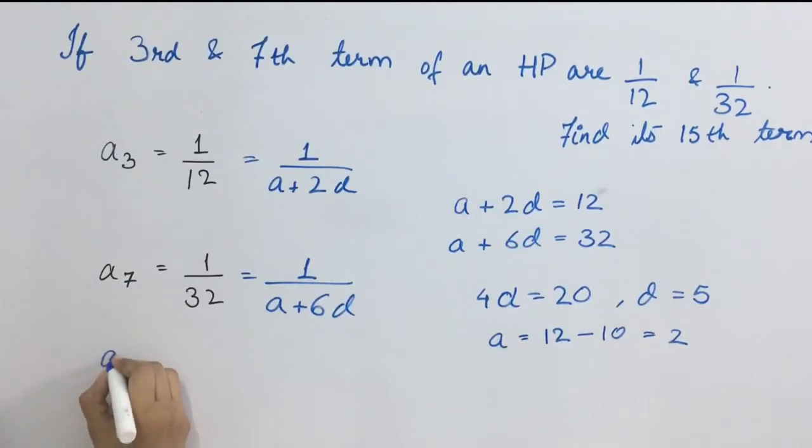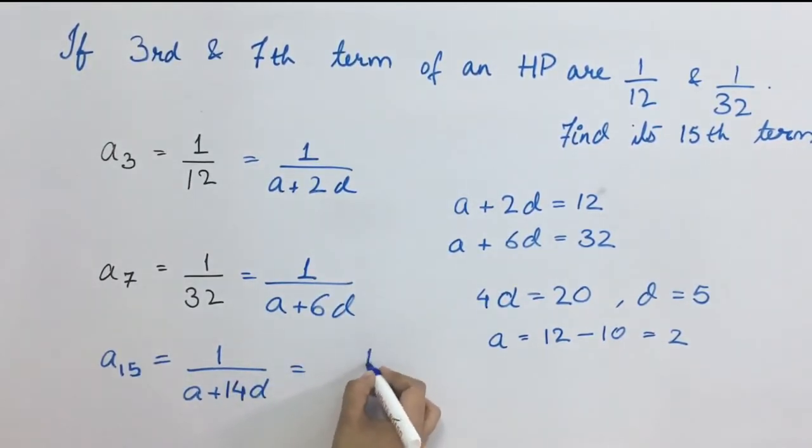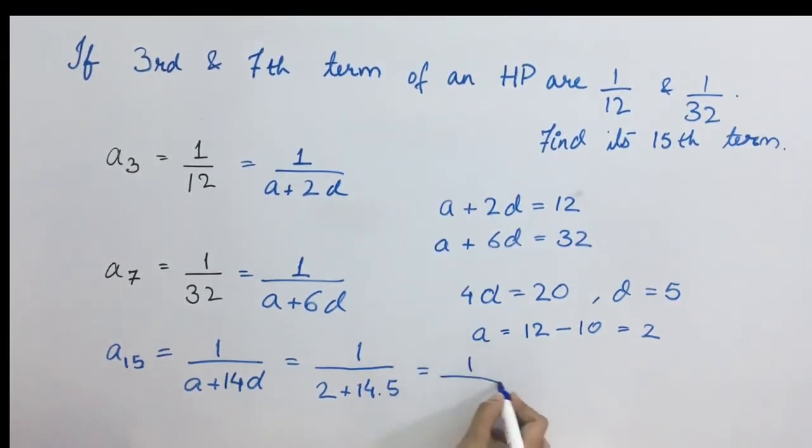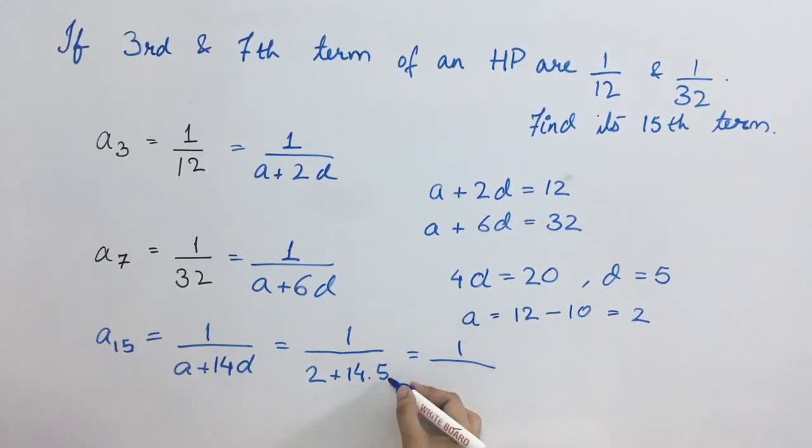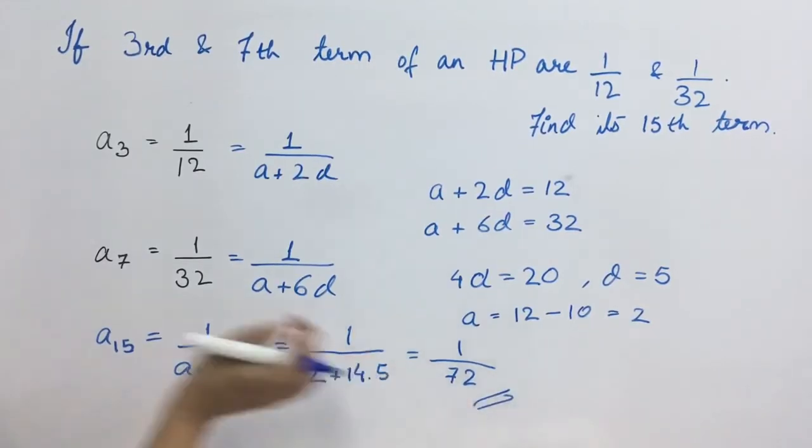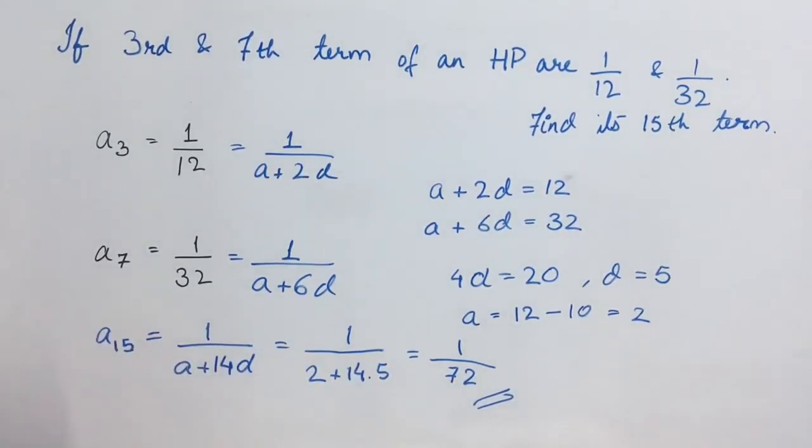From this we can find the value for the 15th term, which is asked in the question. This will be equal to 1 upon A plus N minus 1, that is 15 minus 1, that is 14D. This is equal to 1 upon, what is A? 2. What is D? 5. So this value is 1 upon 14 into 5 is 70 and 70 plus 2 is 72. So this is going to be your 15th term of the given HP.